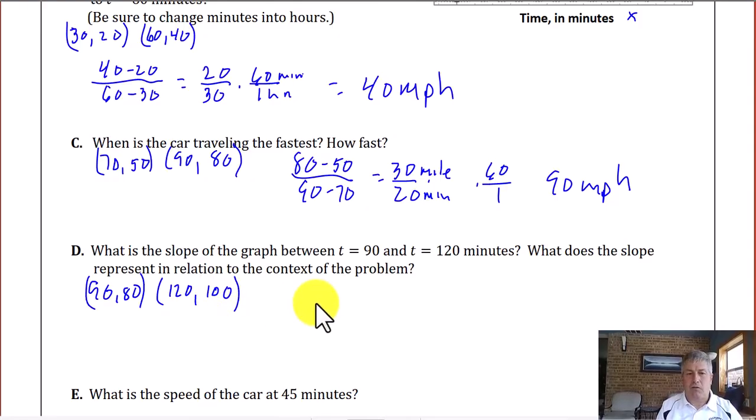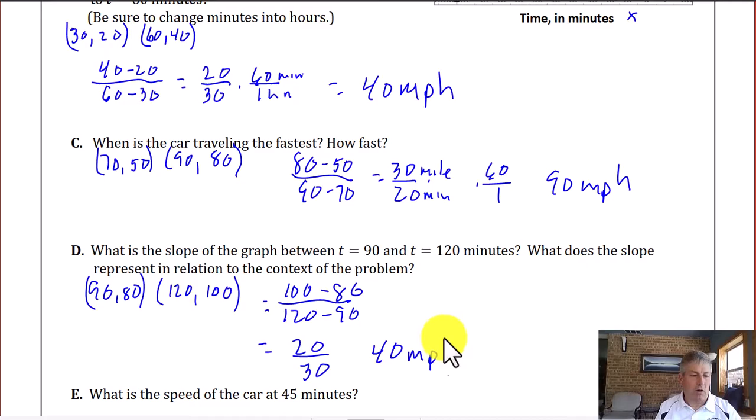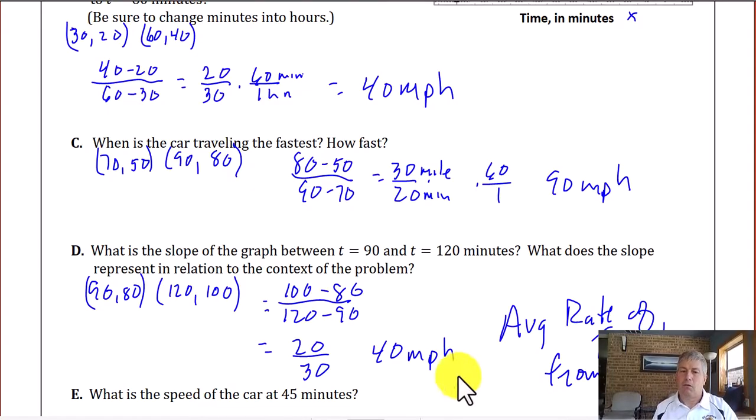Finding our slope. 100 minus 80 over 120 minus 90. That is 20 over 30. We've already done that. That is 40 miles per hour. We did that up in sample B. So the average rate of travel from 90 to 120 minutes is 40 miles per hour.